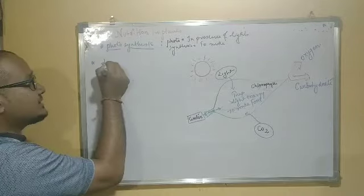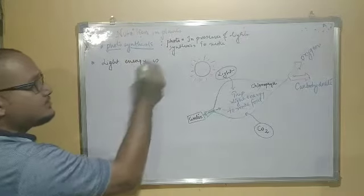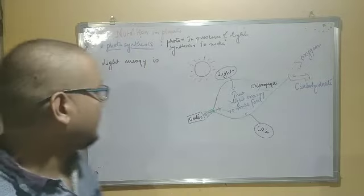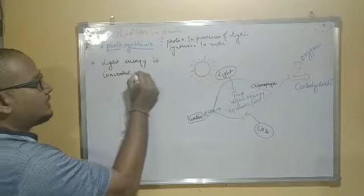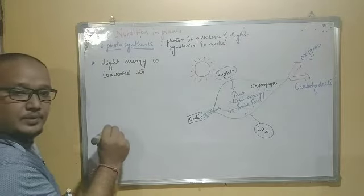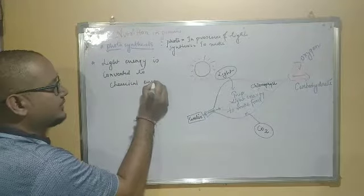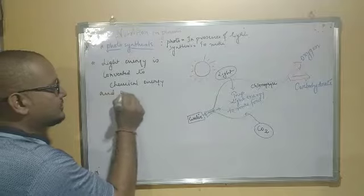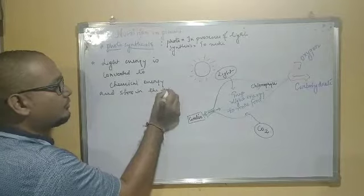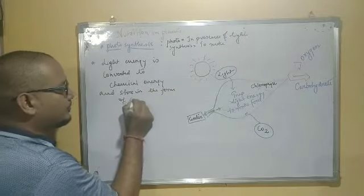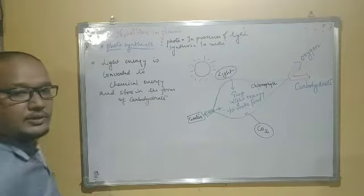In photosynthesis - this is important, students - light energy is converted to chemical energy and stored in the form of carbohydrate.